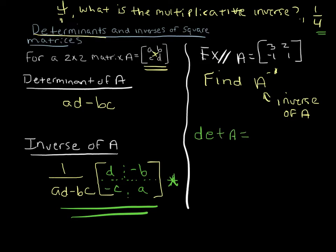Determinant of A, we abbreviate determinant of A, and that we know equals AD minus BC. So AD is 3 times 1, minus, and B times C is 2 times negative 1. Again, that's my AD minus BC. My answer ends up being 3 times 1 is 3, minus 2 times a minus 1 is a plus 2. So this equals 5.